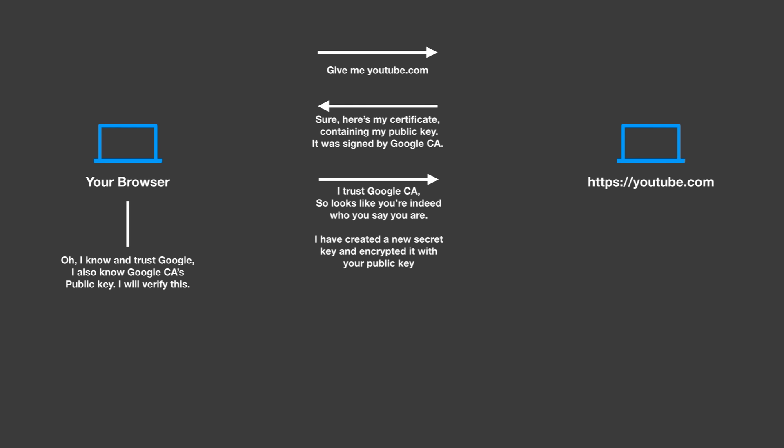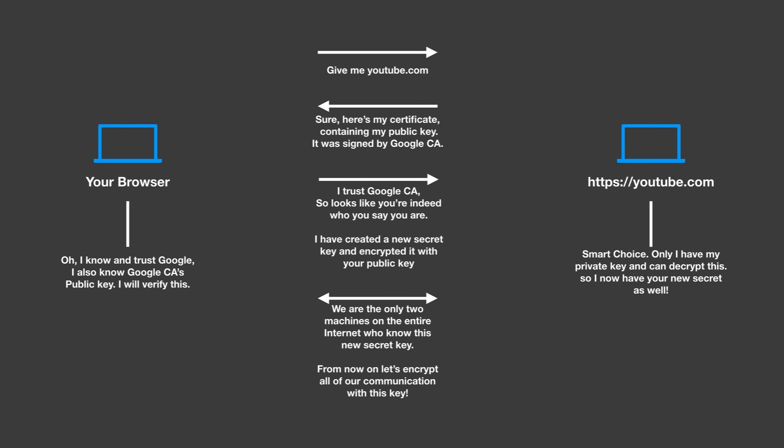Since we assume everything is fine and there's no attack going on, your browser then says, hey youtube.com, I trust the Google certificate authority and it looks like you are indeed who you say you are. Because I trust you, I have created a new secret key and I have encrypted this key with your public key. Remember, if you encrypt something with a public key, only the owner of the private key can decrypt it. So youtube.com then says, only I have my private key, so only I can decrypt this. So now I have this new secret that you just randomly created as well. Both parties realize we're the only two machines on the entire internet who know this new secret key. So from now on, let's encrypt all of our communication with this new key.